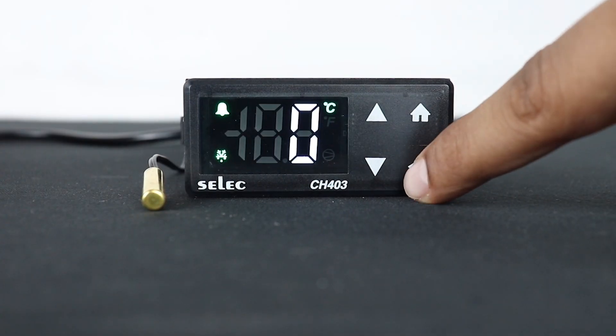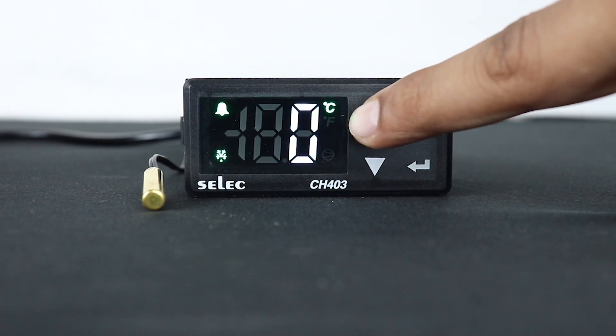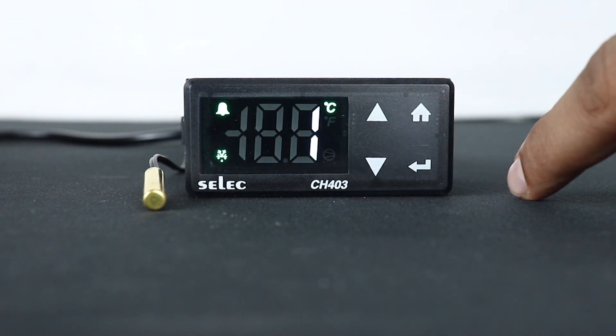Now, A1 means sensor brake alarm. It provides alarm on the display when any fault condition occurs because of the sensor.